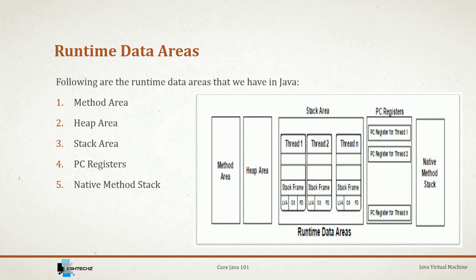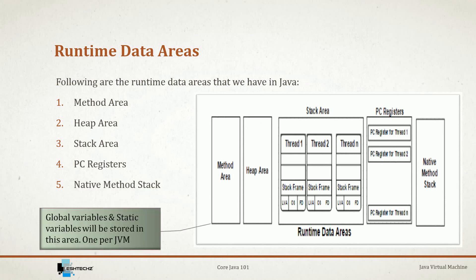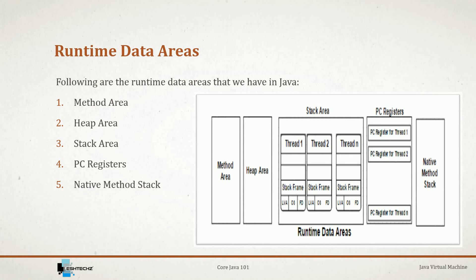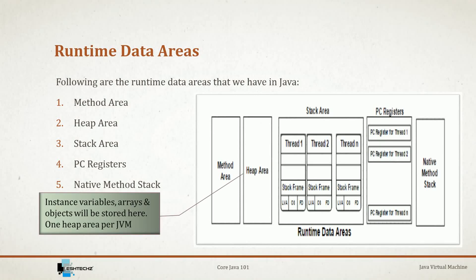Starting with the method area: all class-level data like global variables including static variables will be stored here. This area is shared among all classes and there is only one method area per JVM. Next is the heap area: all instance variables, arrays, and objects are stored here. This is also a shared space with only one heap area per JVM, which means both method area and heap area are not thread-safe.